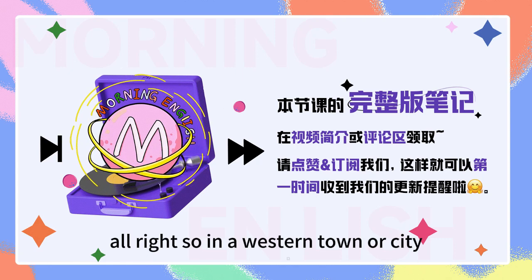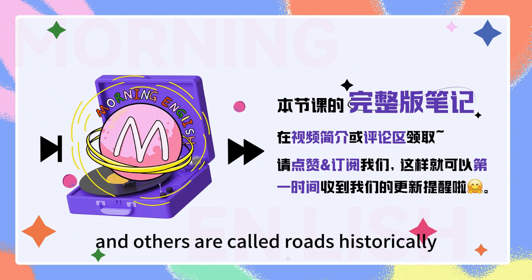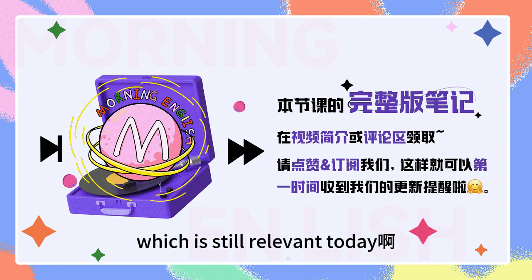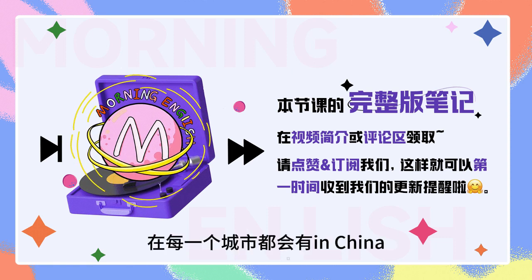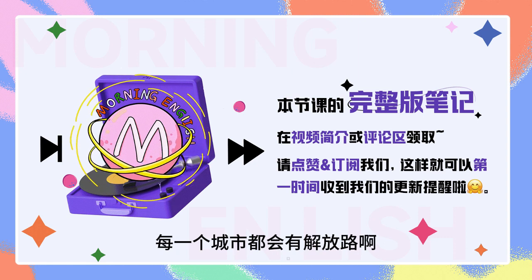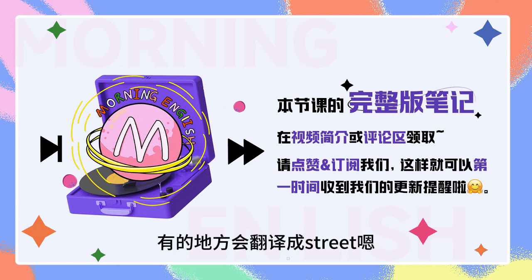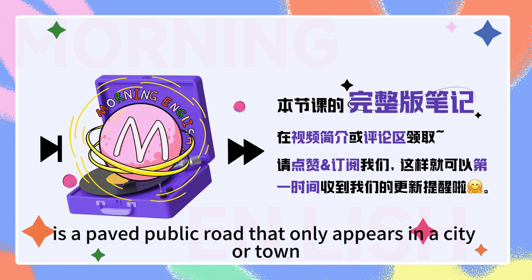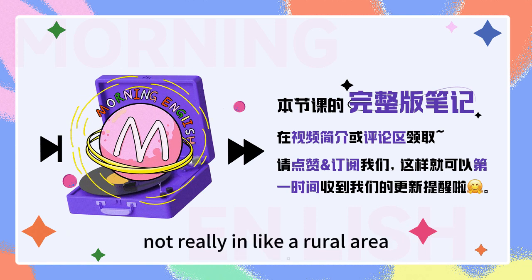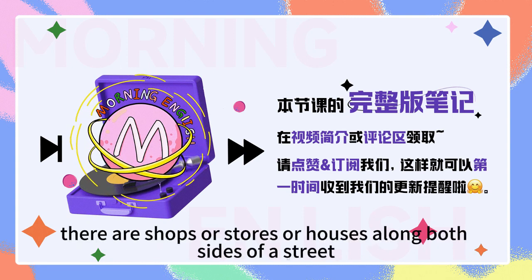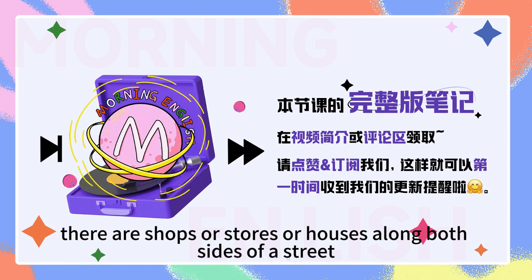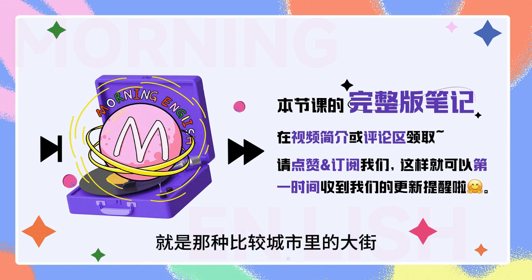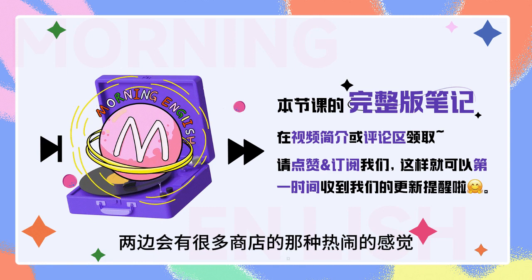Okay, so in a western town or city, you may wonder why some streets are called streets and others are called roads. Historically, there was a difference between a street and a road, which is still relevant today. 就是你发现没有,在每一个城市都会有,in China,每一个城市都会有解放路啊、八一路,然后我们这边的话会翻译成road,有的地方会翻译成street。So street is a paved public road that only appears in a city or town, not really in a rural area like a village. We don't say there are streets there.